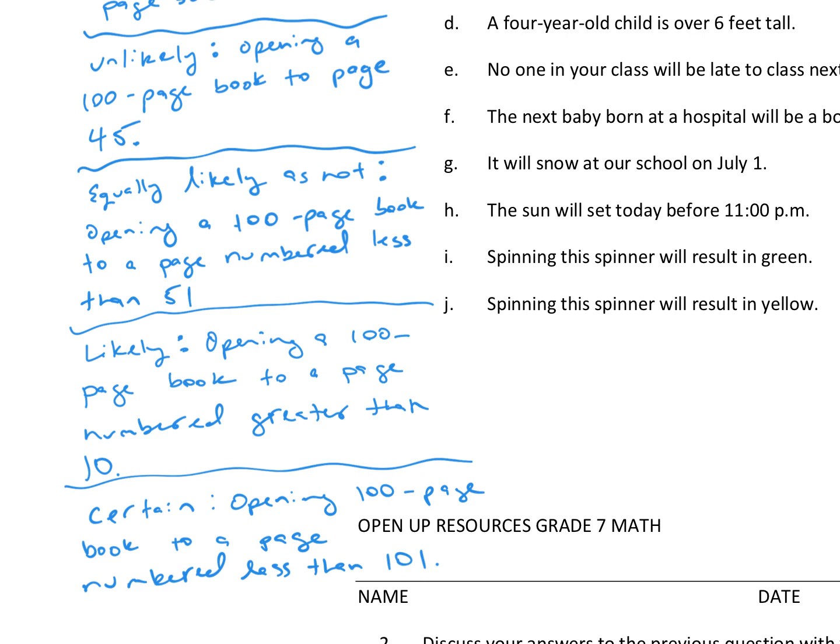So, go ahead, pause the video, identify each of those scenarios as impossible, unlikely, equally likely as not, likely, and certain. Once you're done, come back to the video.